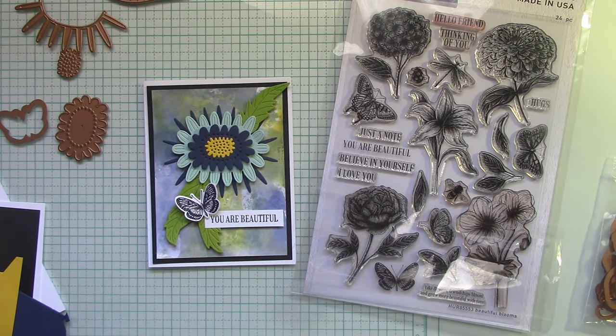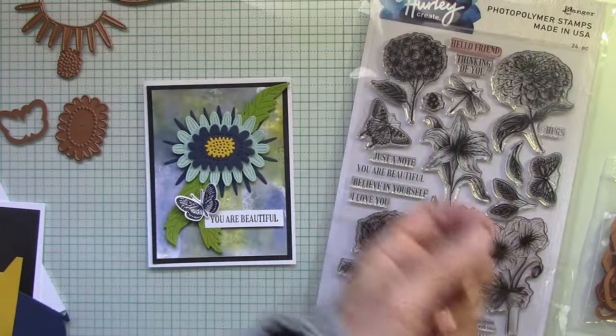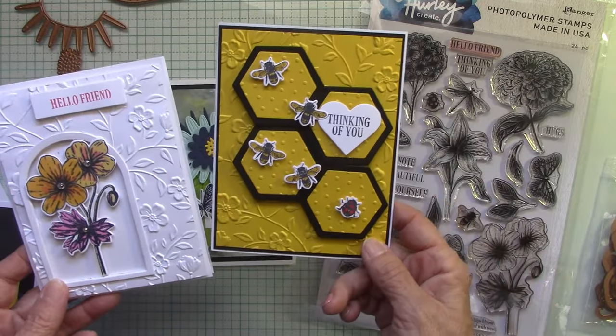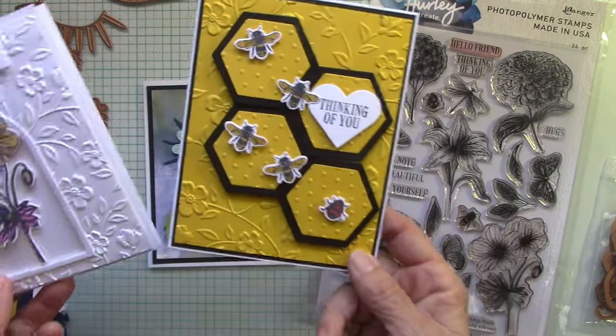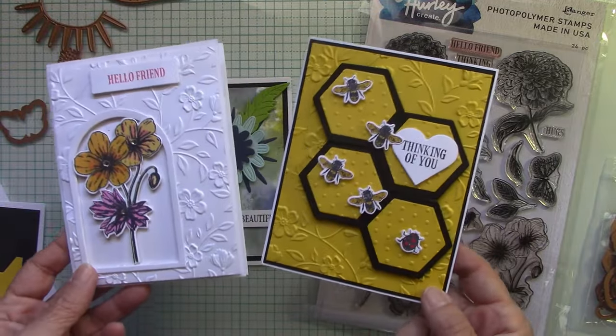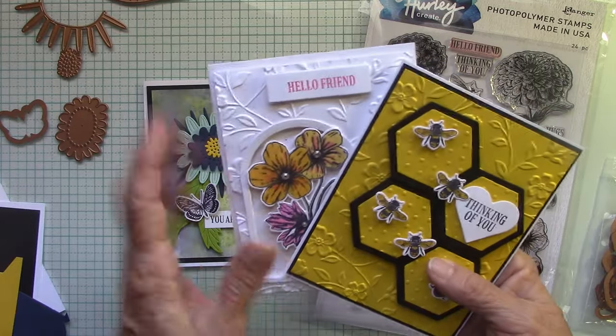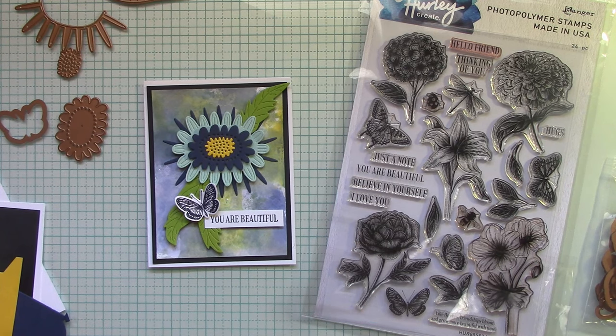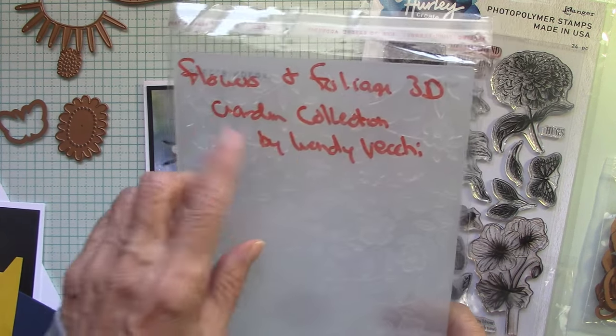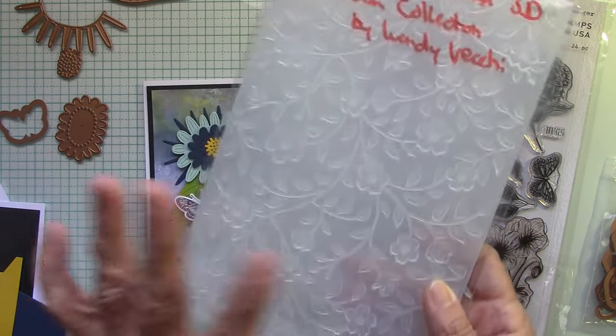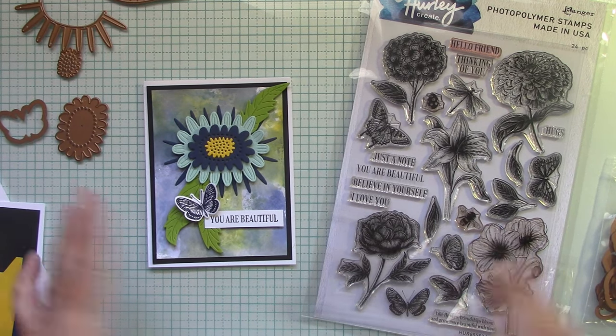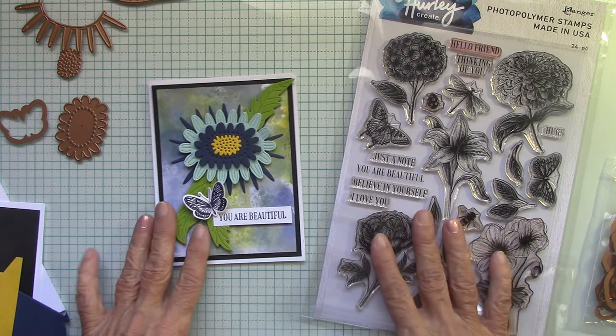So you can always add your butterfly. The sentiments are beautiful - the hello friend, thinking of you. I've done a few cards with those. These are two cards that I did with the hello friend and the thinking of you with the bees and our little ladybug. Look at that embossing folder. That is like my favorite embossing folder - flowers and foliage, a 3D embossing folder by Wendy Vecchi. I use it constantly.